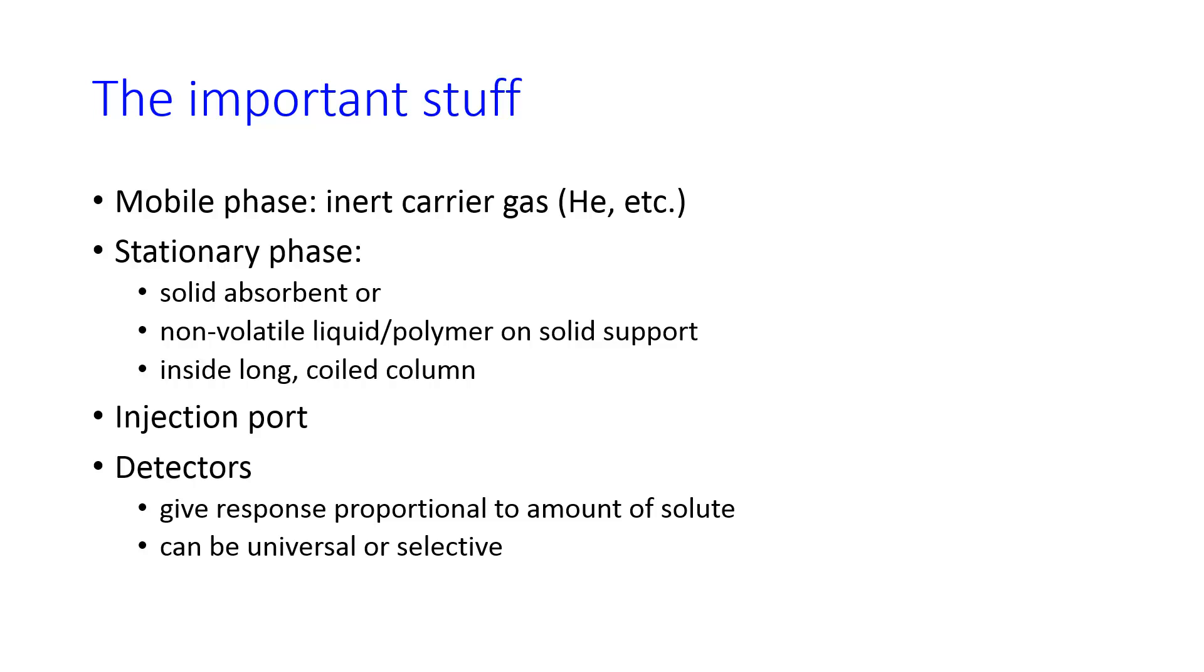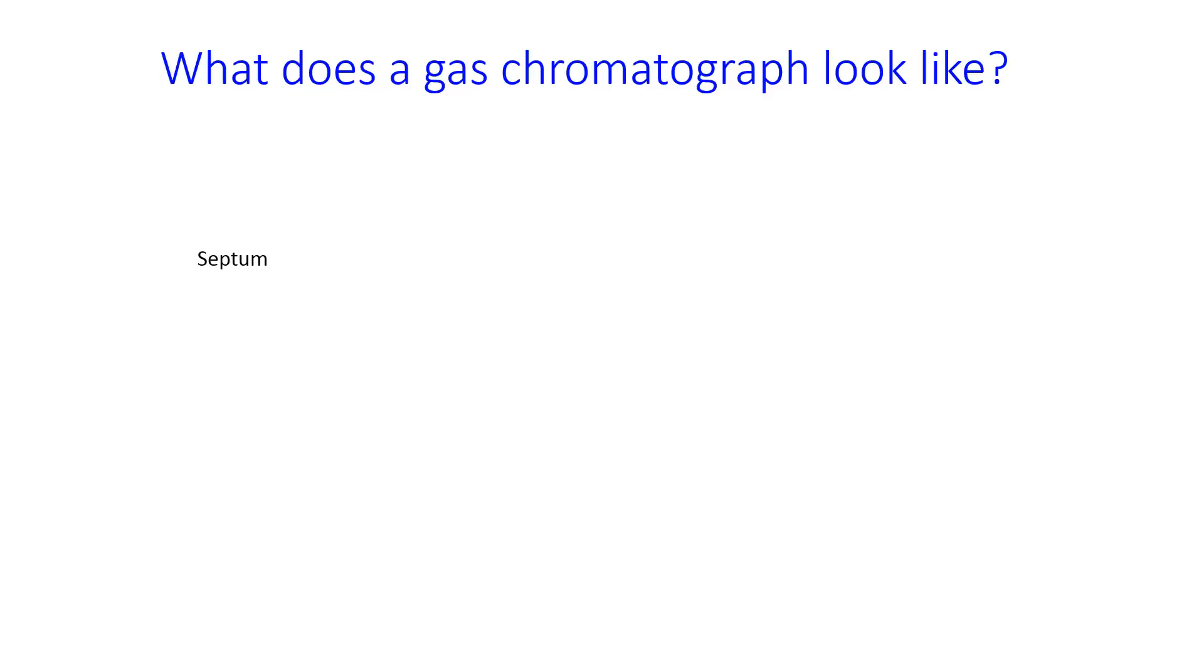First thing we'll talk about is what does a GC instrument look like. The first thing is that there is an injector oven. This injector oven is where the carrier gas comes into the instrument and is mixed with the analyte, and it carries the analyte through the instrument. The injector oven is heated because a gas chromatograph separates analytes based on their boiling point, and so the first thing that has to happen is that they have to be in the gas phase.